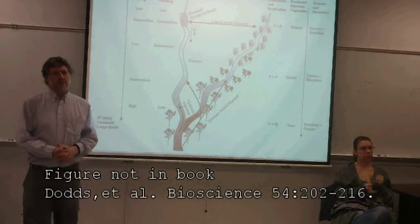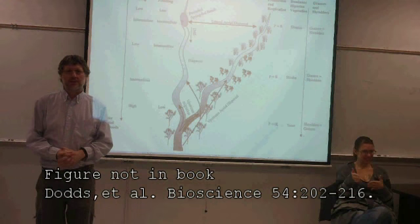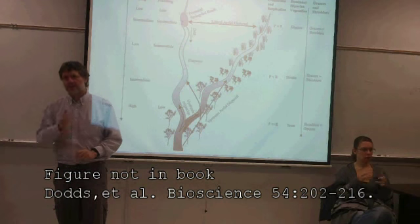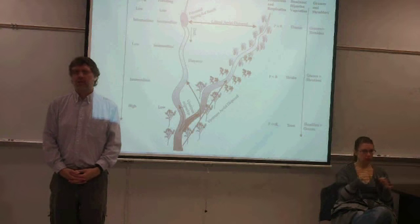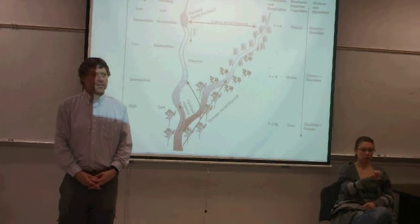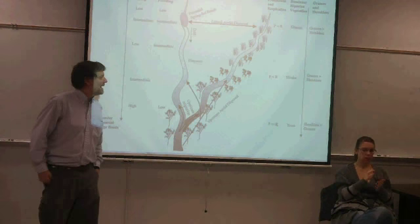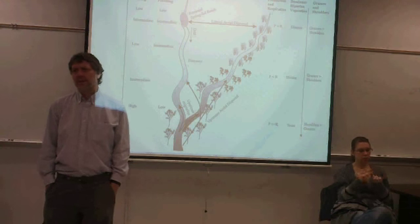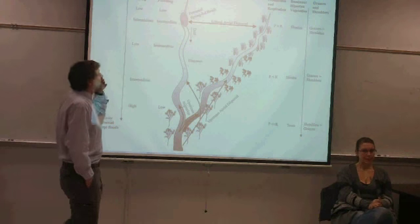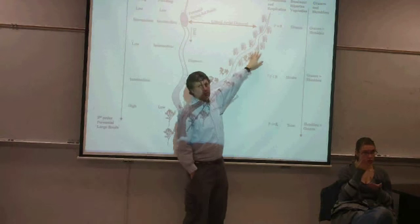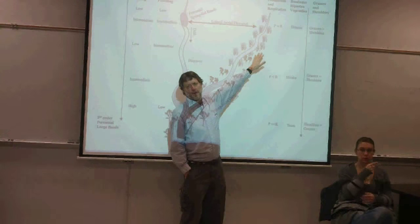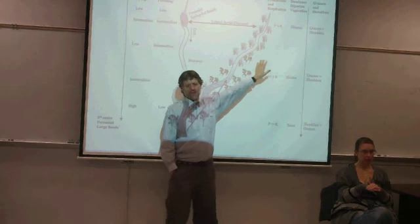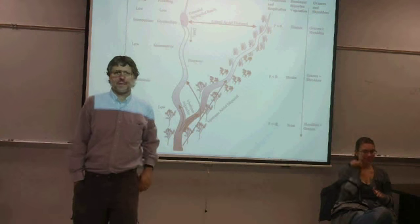Part of the last lecture was talking about the river continuum concept, and we started discussing how various biomes might fit into the RCC. I wanted to go through a more detailed exposition with respect to prairie streams. This is from a paper I did with some colleagues on how our view of prairie streams is developed relative to the river continuum concept. Because you have grasslands upstream, you have more light and less leaf litter coming in up there — something fundamentally different from the original paper.